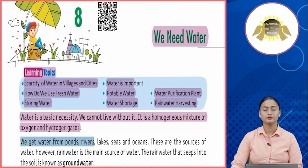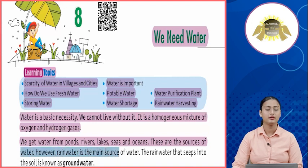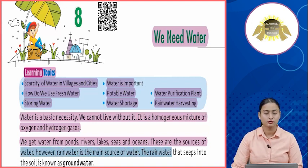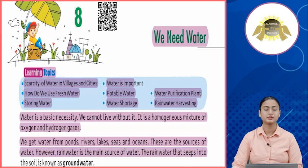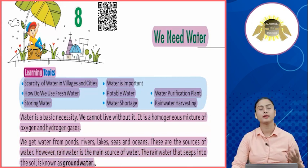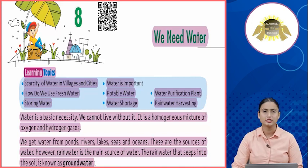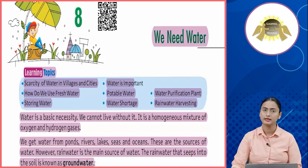We get water from ponds, rivers, lakes, seas and oceans — these are the sources of water. However, rainwater is the main source of water. The rainwater that seeps into the soil is known as groundwater. Toh humara jo main source hai wo hai baarish, aur kaafi sara paani humari zameen ke neeche bhi hai, jo hum alag-alag tariqon se nikalte hain.